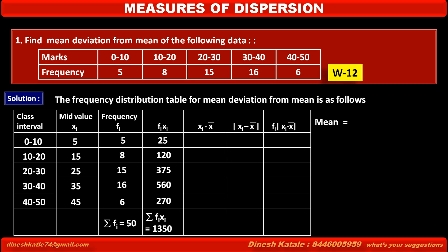First we have to find the mean, denoted by x̄, which is equal to Σfi·xi divided by Σfi. That is 1350 divided by 50, which equals 27. Therefore, the value of mean x̄ is equal to 27.